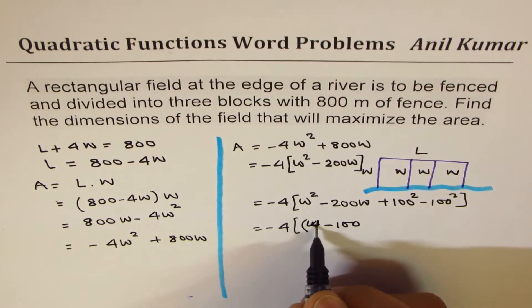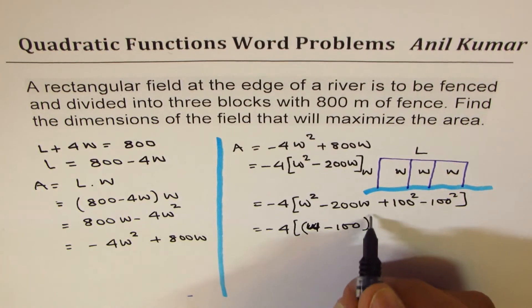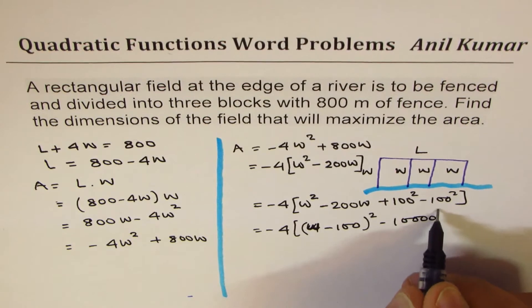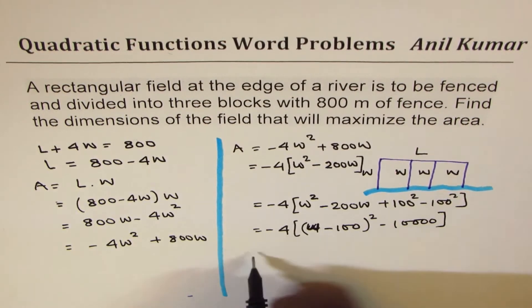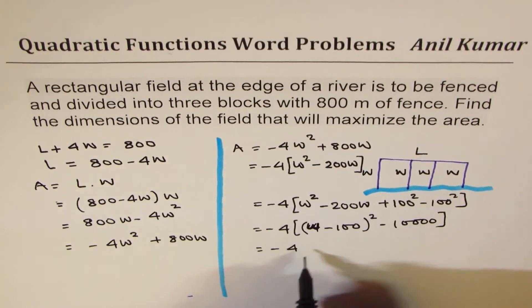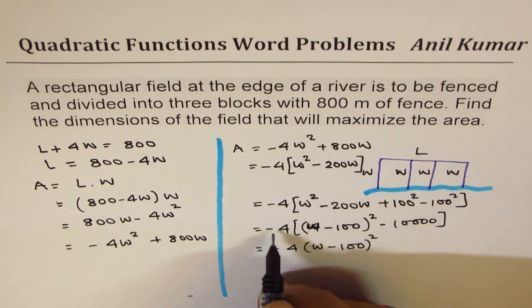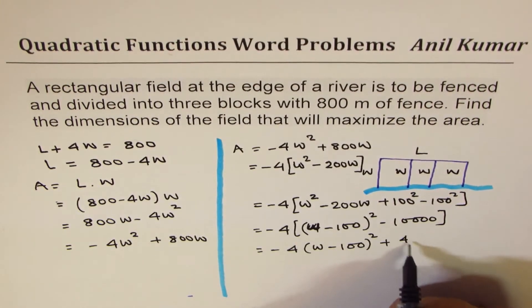That gives you minus 4 times (W minus 100)(W minus 100) whole square. Open the bracket so you get minus 4 times (W minus 100)² and that gives us plus 40,000.